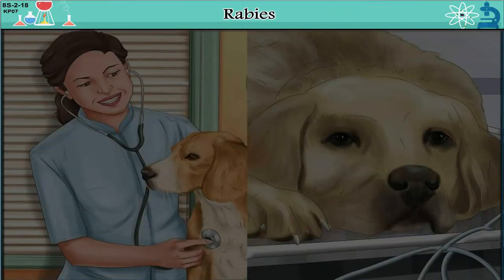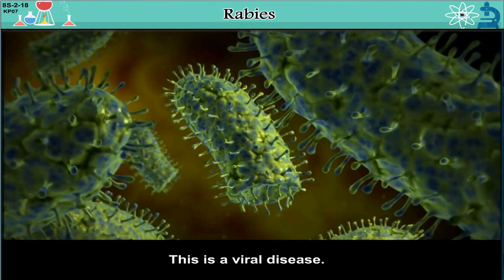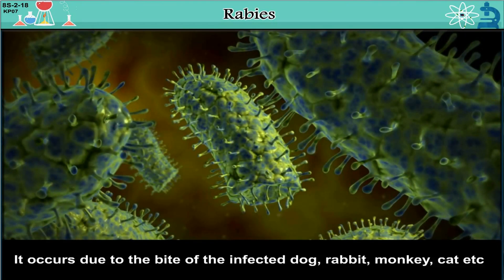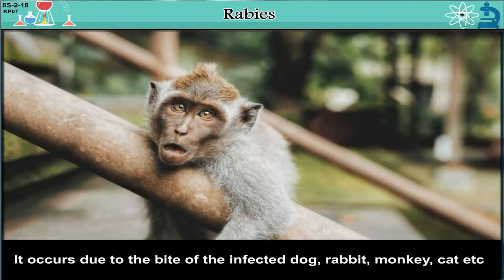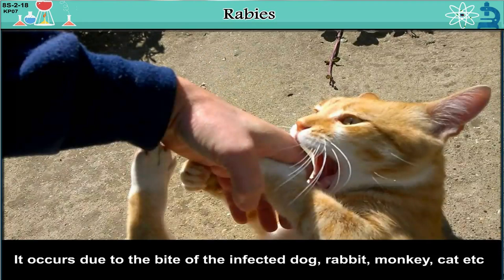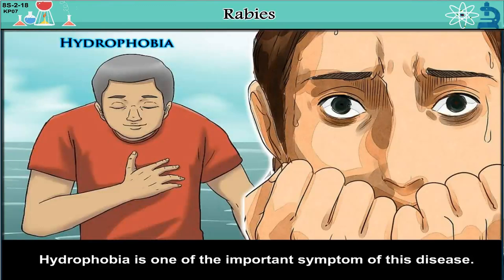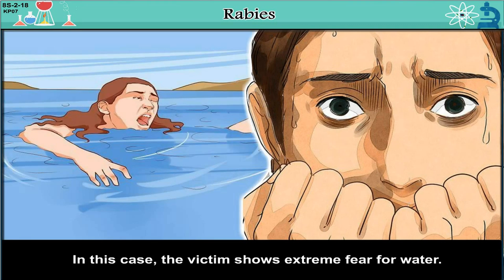Rabies. This is a viral disease. It occurs due to the bite of an infected dog, rabbit, monkey, cat, etc. The virus enters the brain via neurons. Hydrophobia is one of the important symptoms of this disease. In this case, the victim shows extreme fear for water.